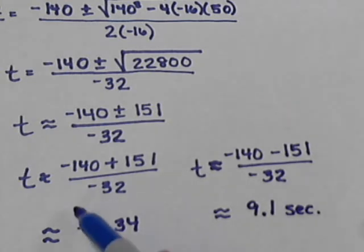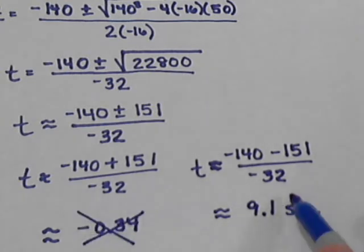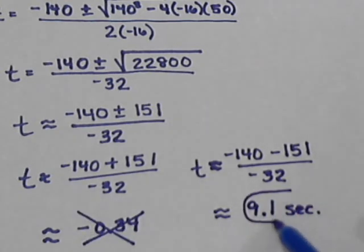And since we're dealing with time, the negative number doesn't make any sense. So in this situation, it would take 9.1 seconds for the coyote to land on the ground.